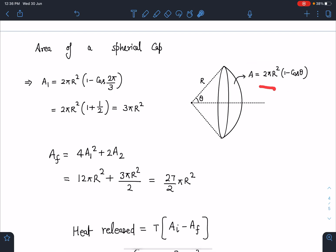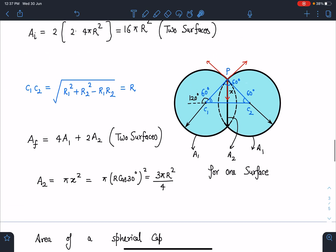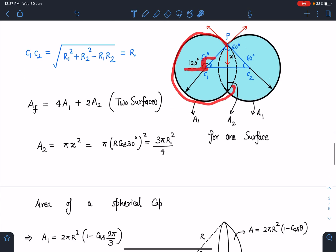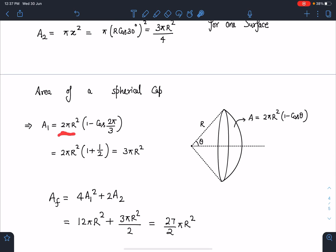You can check here now, this cap, this area, this angle is actually 120 degrees. So I can write A₁ value as 2πR²(1 - cos 120). When I simplify I am going to get A₁ as 3πR².